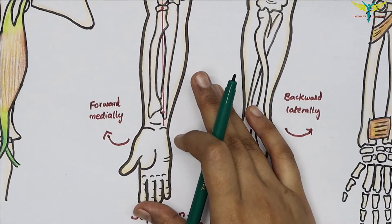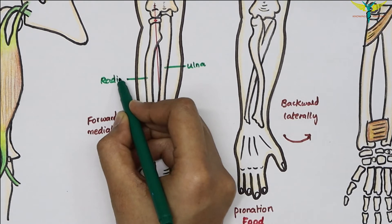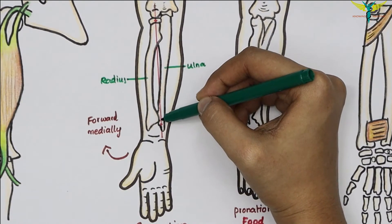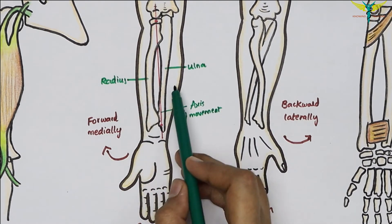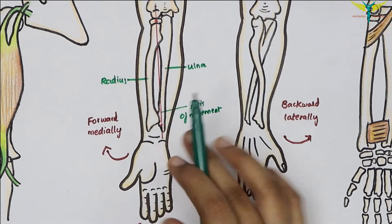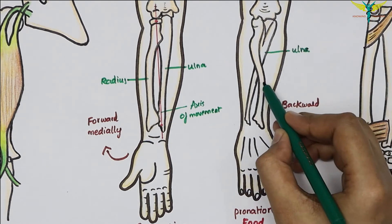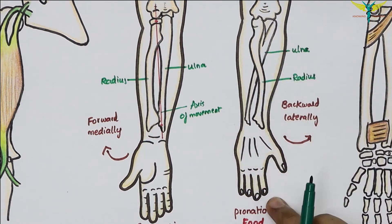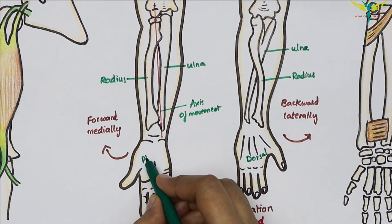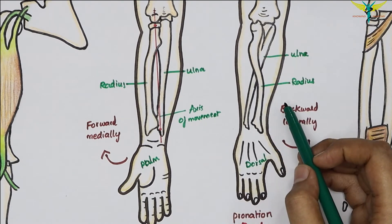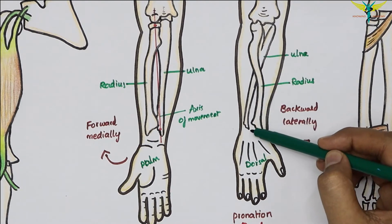In this diagram we can see the supination position. This is the ulna, this is the radius, and the red color indicates the axis of movement. In supination, the radius and ulna lie parallel to each other.